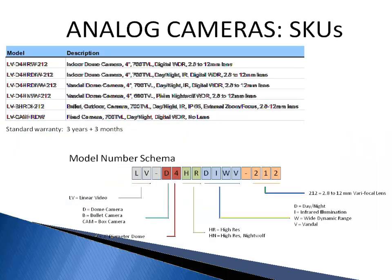Here is a summary of the analog camera models — four dome cameras, one bullet, and one box camera. When looking at the model number schema, all of the new video products start with LV, which stands for Linear Video. After the hyphen, you will see D for dome, B for bullet, Cam for box camera, and the 4 refers to the size — in this case 4 inches. HR refers to high resolution with the 700 TV line, while HN refers to high resolution with Nightwolf.